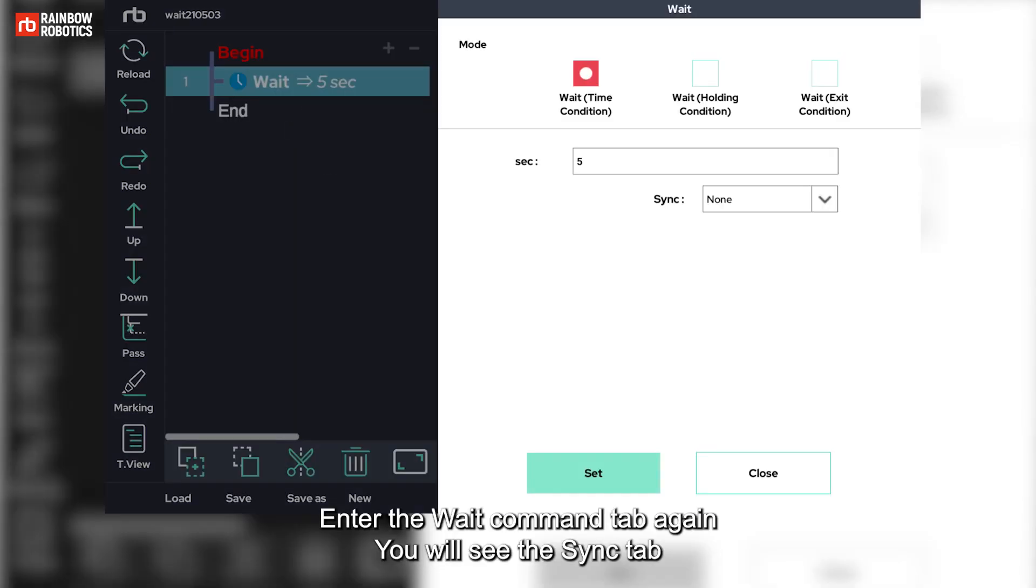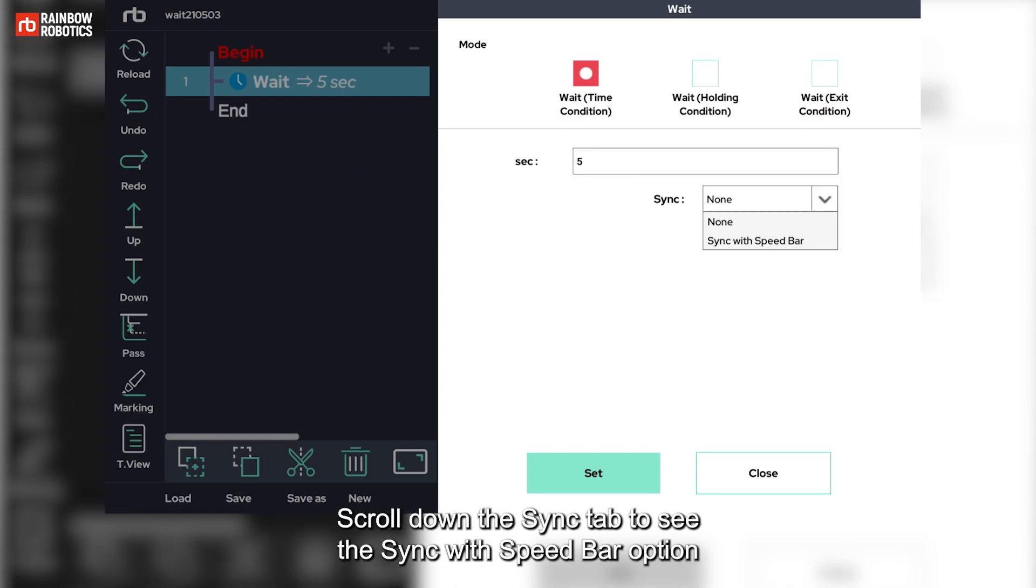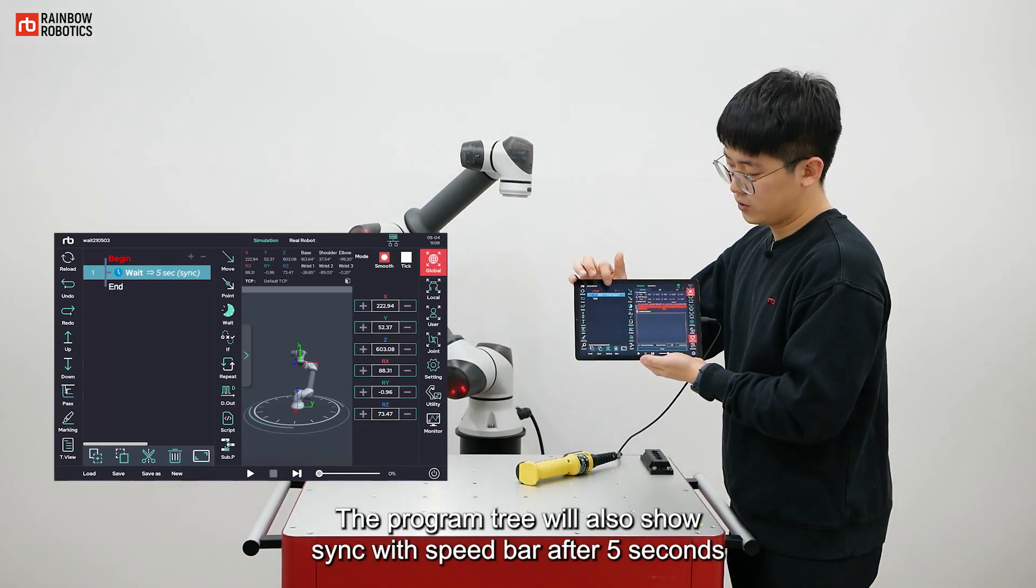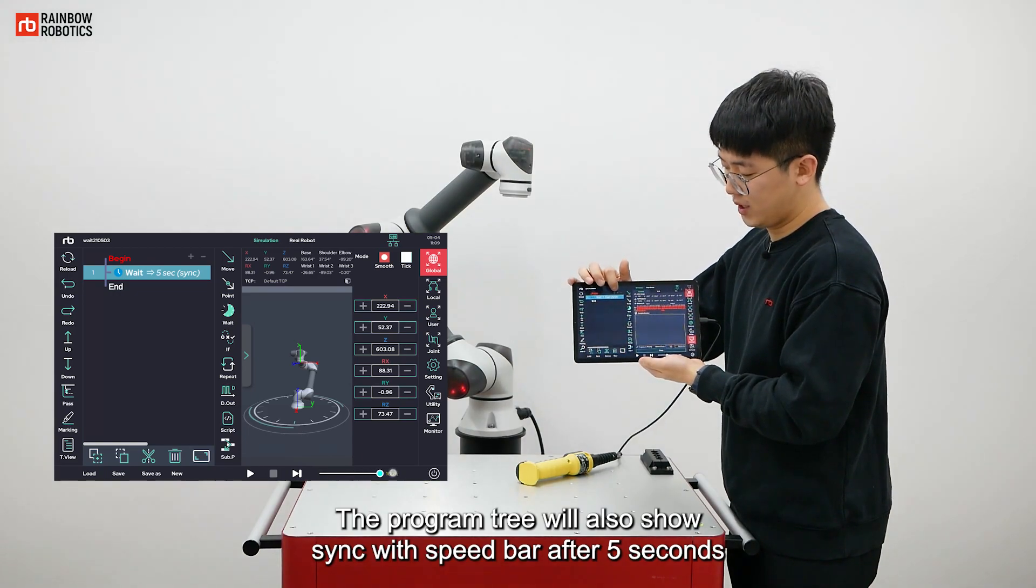Enter the wait command tab again. You will see the sync tab. Scroll down the sync tab to see the sync with speed bar option. Now, select it and press set.